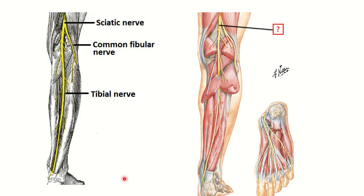First of all, we have to look at the tibial nerve and its area of supply. Here we can see the tibial nerve, located in the posterior aspect of the leg. The tibial nerve originates from the sciatic nerve at the upper part of the popliteal fossa, where the sciatic nerve terminates into the tibial nerve and the common peroneal nerve.